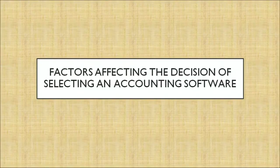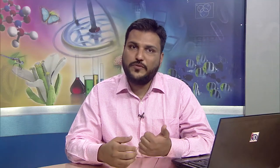What are the factors affecting the decision of which software to use? Number one: it should be flexible. Second: cost of installation and maintenance. Third: size of the organization. Fourth: ease of adoption and training needs. Fifth: expected level of secrecy. Sixth: exporting and importing data facility. The software should be very flexible so it could be customized as per user needs. Installation and maintenance should be less costly. The size of the organization also impacts how costly the software to be implemented will be. Secrecy of data needs to be maintained, and exporting and importing data should be possible.